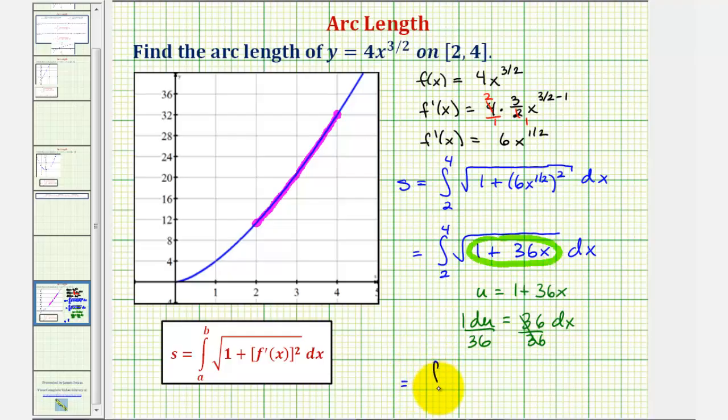Right now the limits of integration are in terms of x. Let's write them in terms of u. When x is 2, u is equal to 1 plus 36 times 2, that's 73. And when x is 4, we'd have 1 plus 36 times 4, which is 145. And now we have the square root of u, and then dx is equal to 1 over 36 du. So we'll put the du here, but we'll factor out the 1 over 36.